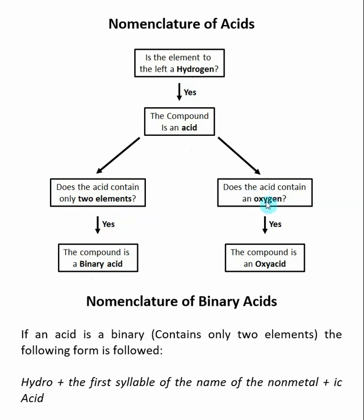If the acid contains an oxygen, it's probably what's called an oxyacid. There are a few different ways you can look at this. If you have more than two elements inside of your acid, it's probably an oxyacid. Also, if you see that the acid contains a polyatomic that contains an oxygen, it's probably an oxyacid.